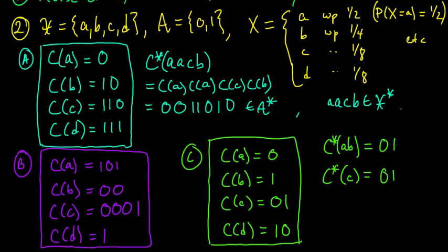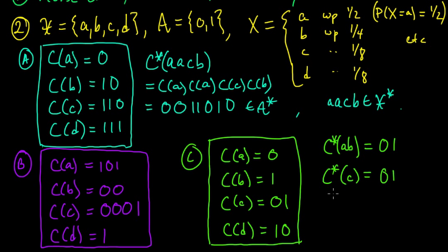We've been talking about symbol codes or variable length codes, sometimes also referred to as source codes. We saw examples of symbol codes and noticed that example C had a serious deficiency: for a given sequence of code words, we were not able to uniquely determine the sequence of source symbols that generated it. We referred to this as being not uniquely decodable. Now let's come up with a more mathematical definition of that property. We'd like to characterize codes that are uniquely decodable, in the sense that for any given sequence of code words there is a unique sequence of source symbols that generated it.